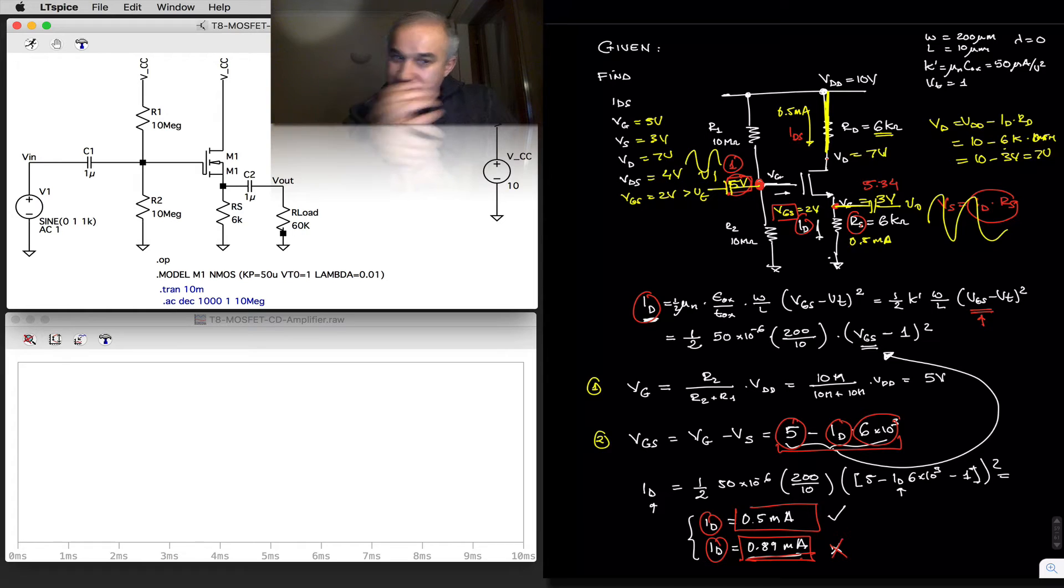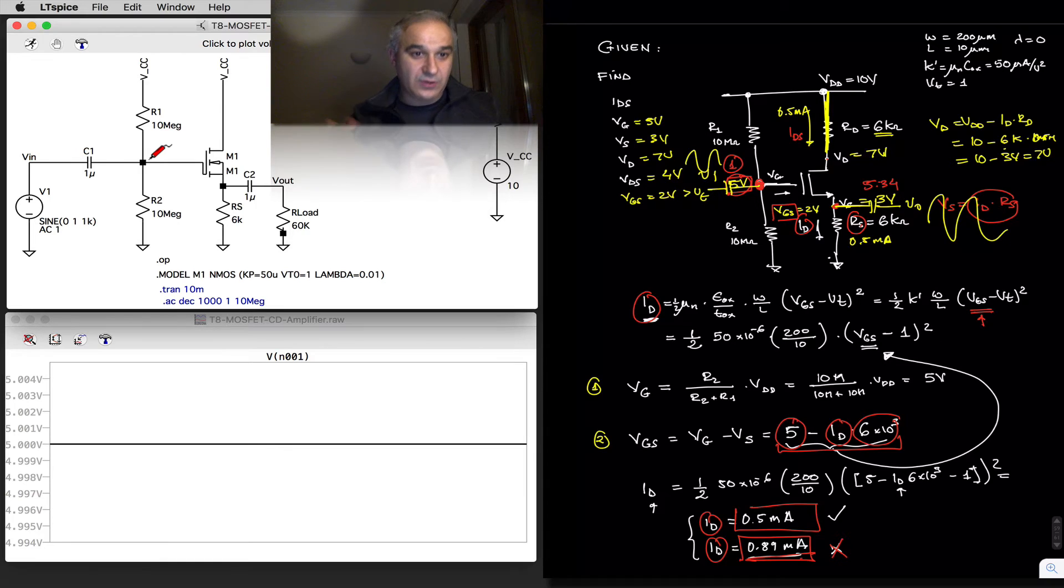So if we do DC analysis, or an operating point analysis, the capacitors are all open. And so what is the voltage at the gate in this case? We expect 10 volts with a voltage divider of 10 meg and 10 meg gives us 5 volts.